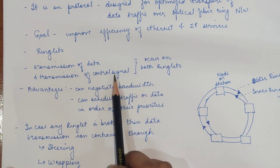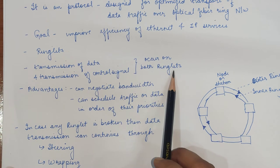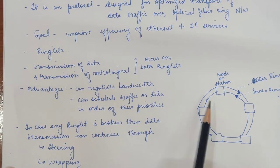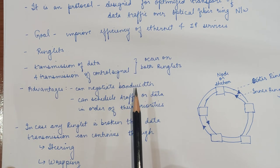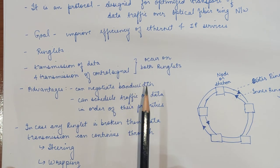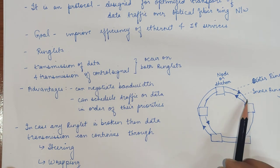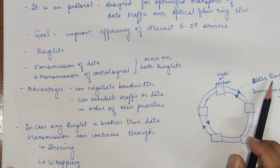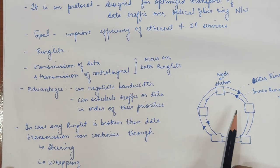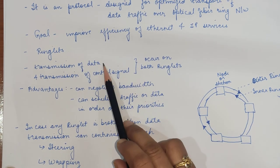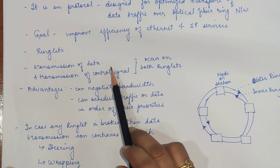Transmission of data and transmission of control signals can occur at both ringlets. However, the control signal is carried in the opposite direction of the data traffic whose information it carries. For example, if the inner ring is carrying data, the outer ring carries the corresponding control signal.